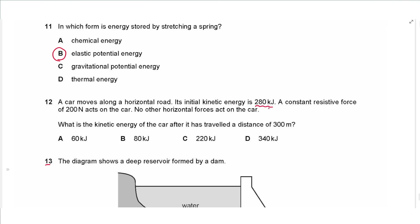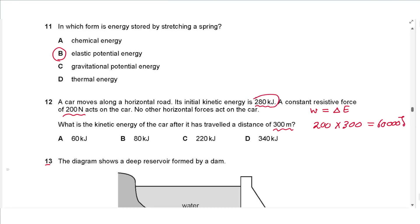Question 12: A car with initial kinetic energy of 280,000 J has a constant resistive force of 200 N. After traveling 300 m, the work done against friction is 200 × 300 = 60,000 J. The kinetic energy decreases by 60,000 J: 280,000 − 60,000 = 220,000 J, or 220 kJ. The answer is C.